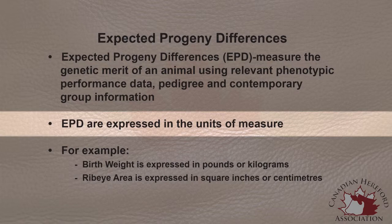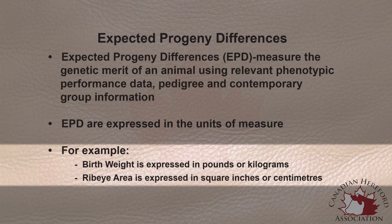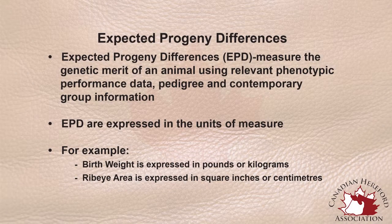For instance, an EPD for birth weight would be expressed in pounds or kilograms. An EPD for ribeye area would be expressed in square centimeters or square inches, as it is actually measured on the animal itself or the phenotype itself.